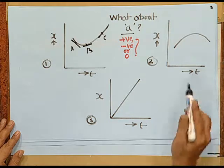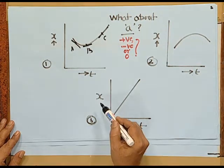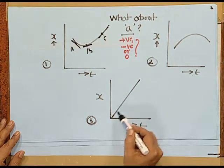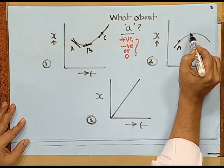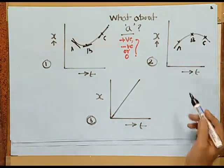You can approach graph 2 the same way and find out the answer. For graph 3, the slope of the line is constant, so the acceleration is zero. When an x versus t graph is linear, acceleration is zero. For graph 2, mark points a, b, and c and examine whether the velocity change is positive or negative — you will get the answer.